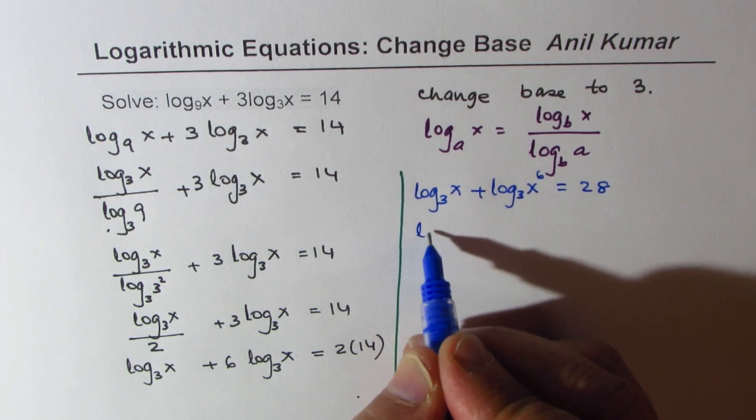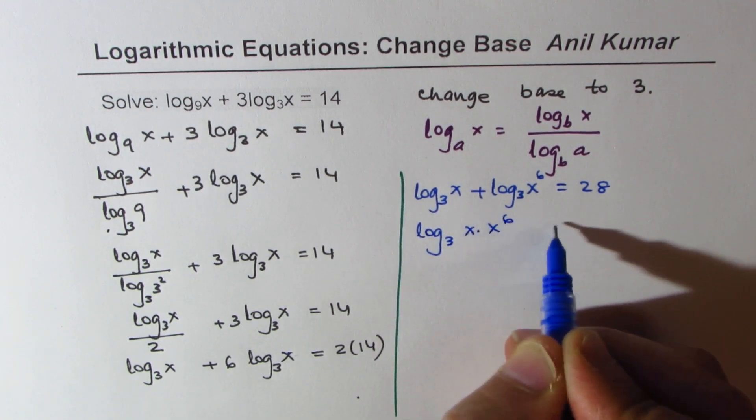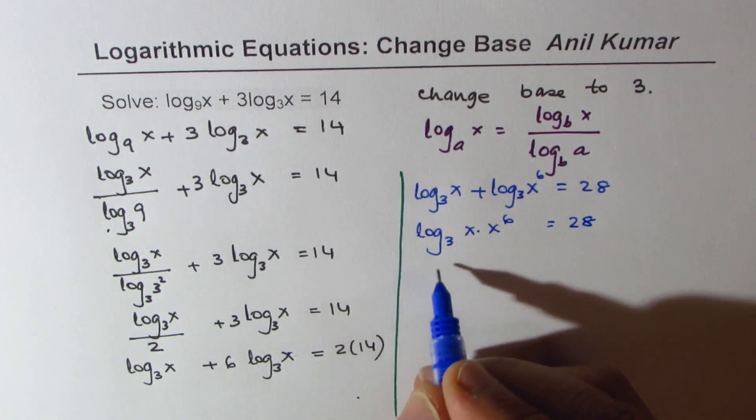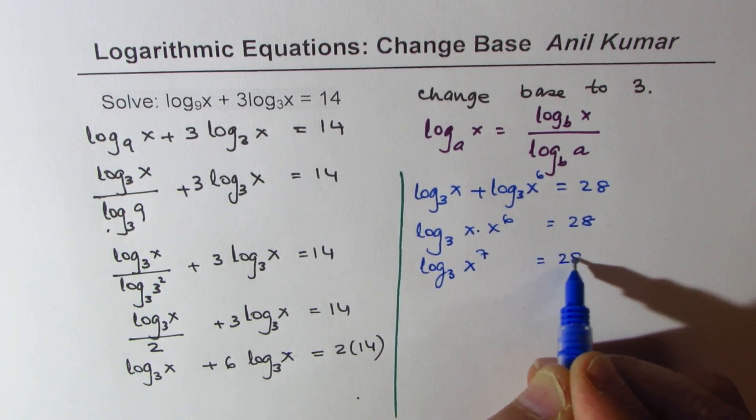That gives you log base 3 of x times x to the power of 6 equals 28, or log base 3 of x to the power of 7 equals 28.